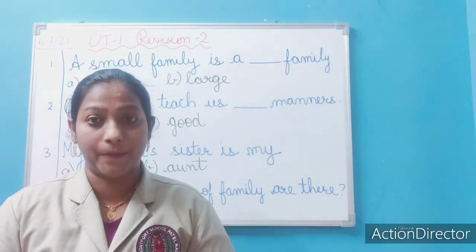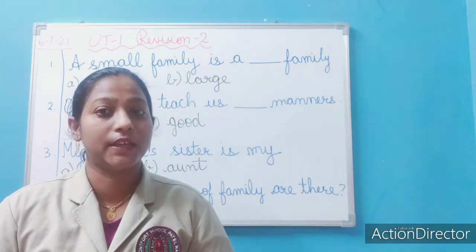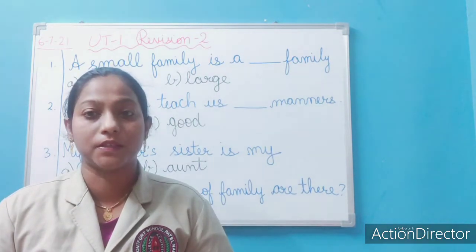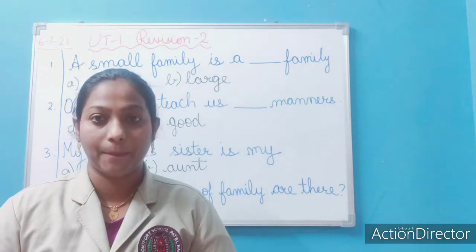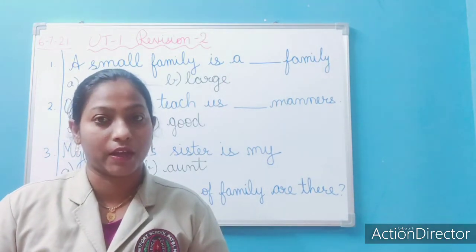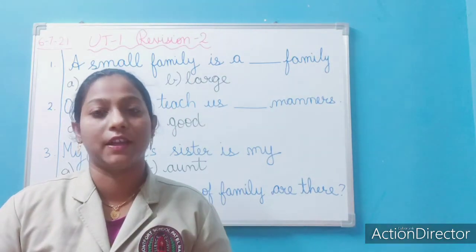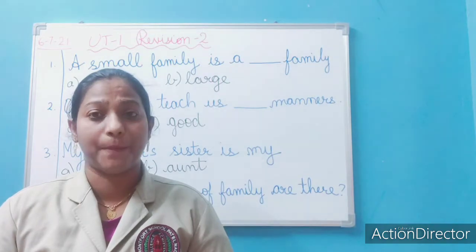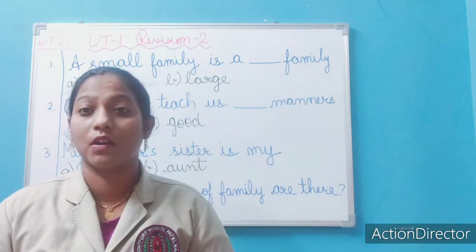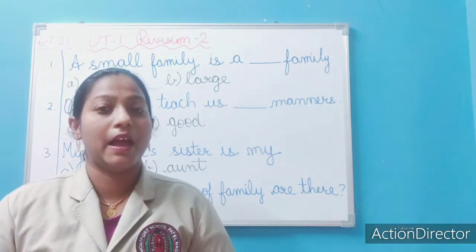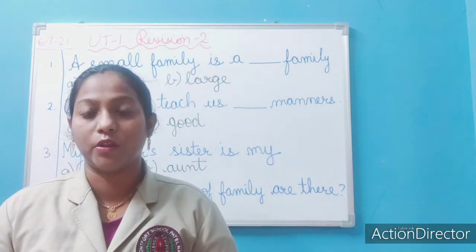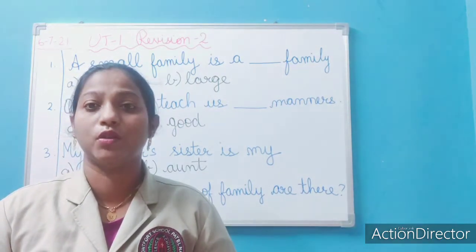Then we have studied about family tree. What is a family tree? It shows the relation between different members of the family. We have studied about siblings, cousins, and who are called parents. We have also learned about your mother's brother — whom you call mama — and what you call uncle and aunt.